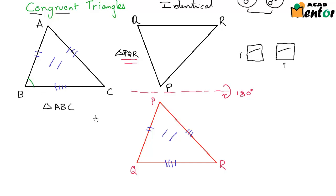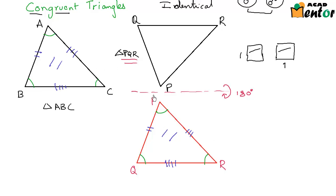Angle B and angle Q are of the same measure. So is angle A and angle P. Similarly, angle C is the same as angle R. So these two triangles are absolutely the same.